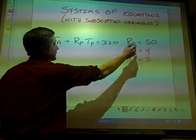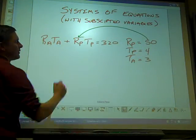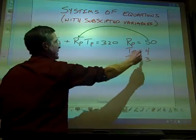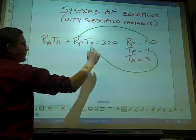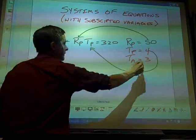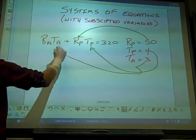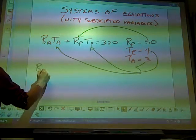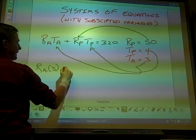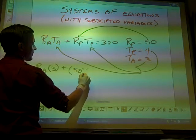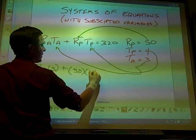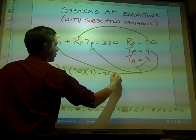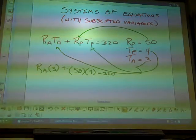Now, if R_P is 50, can't I just put the 50 in here? And if T_P is 4, I can put the 4 here. And finally if T_A is 3, I'll put it here. And if I do that, and I use parentheses when I substitute, because any time you replace a variable you do that.